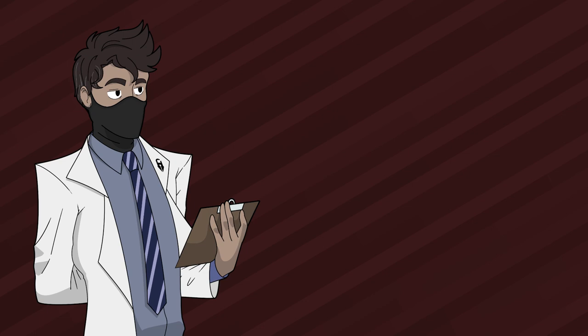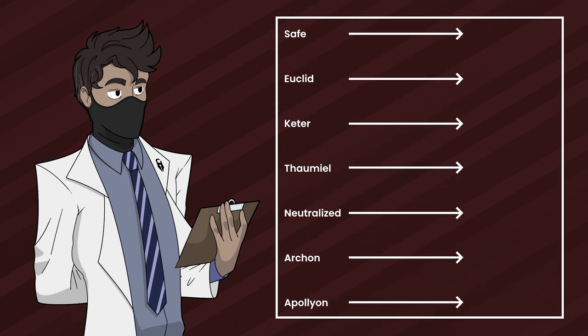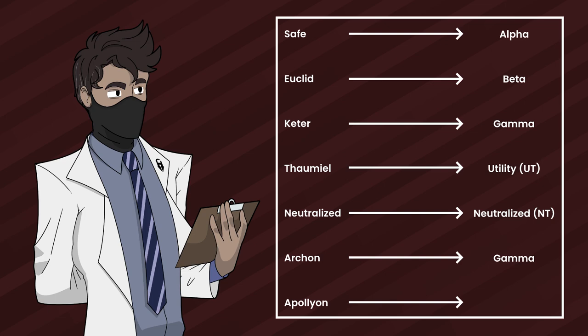Now let's compare and contrast these with the RPC's object class. Safe is Alpha — easy to contain. Euclid is Beta — difficult to contain. Keter is Gamma — very difficult to contain. Thaumiel is Utility — uses an anomaly to contain an anomaly, or is beneficial. Neutralized is neutralized, but both have different definitions; one common thing is that the anomaly's properties are inert. Archon is a unique class with no direct RPC equivalent, though the closest would be Gamma. And Apollyon is Omega — impossible to contain.